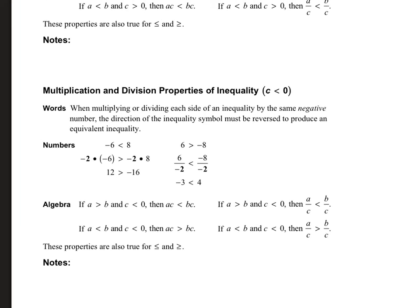But if you look at this one: negative 6 is less than 8, which is true, but we multiply by a negative number. Now negative 6 times negative 2 becomes positive, and 8 flips back to negative. So if it was less than, it flips over to greater than. So if you multiply or divide by a negative number — where C is less than 0 — you have to flip-flop the sign. If it was greater than, it flips to less than. That is always going to be true for multiplying or dividing by a negative. Pay attention to your negatives, especially when doing inequality problems.